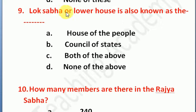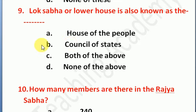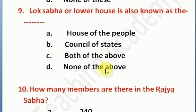Question number 9: Lok Sabha or Lower House is also known as — Option A: House of the People, Option B: Council of States, Option C: both of the above, Option D: none of the above. The right answer is Option A — House of the People.